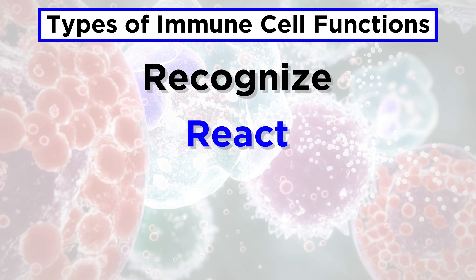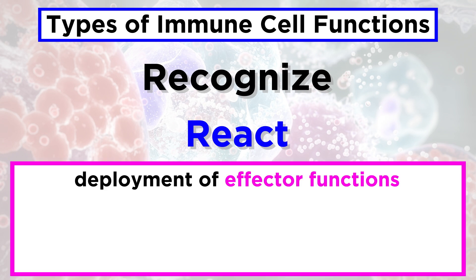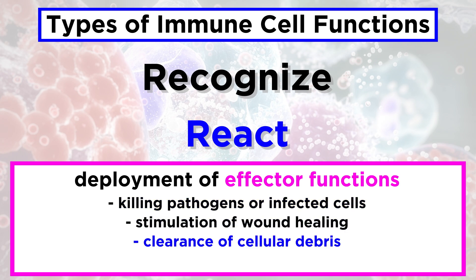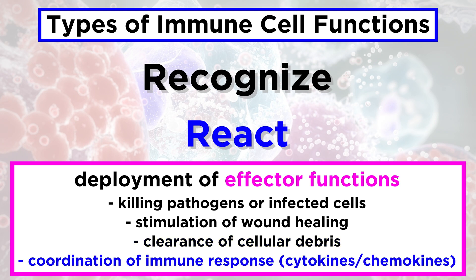Function two: react. Once they recognize a problem, immune cells react by deploying effector functions, which are specific to the type of threat at hand. These effector functions can include mechanisms which kill pathogens or infected cells, stimulation of wound healing, clearance of cellular debris, and coordination of the immune response through cytokine and chemokine signals.